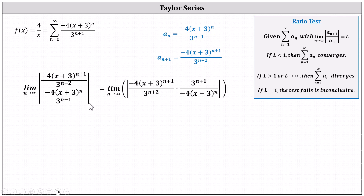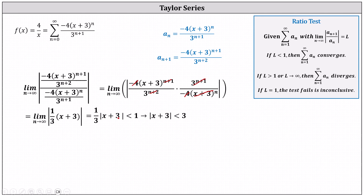Now let's begin to simplify. Negative four divided by negative four simplifies to one. Three to the power of n plus one divided by three to the power of n plus two simplifies to one factor of three in the denominator. The quantity x plus three to the power of n plus one divided by the quantity x plus three to the power of n simplifies to one factor of x plus three in the numerator. We can now write the limit as the absolute value of one third times the quantity x plus three, which equals one third times the absolute value of x plus three, and for the series to converge this must be less than one.